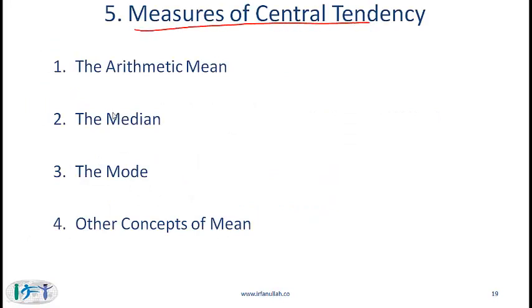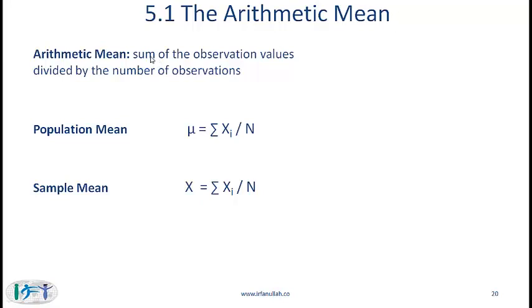Measures of central tendency: the arithmetic mean is the simplest measure and is arrived at by adding all observations and dividing by the number of observations. The arithmetic mean for a population is generally denoted by the Greek symbol mu — you sum all n observations and divide by n. A sample mean is generally denoted by X-bar; the method is exactly the same — you sum all observations in the sample and divide by the number of observations in the sample.